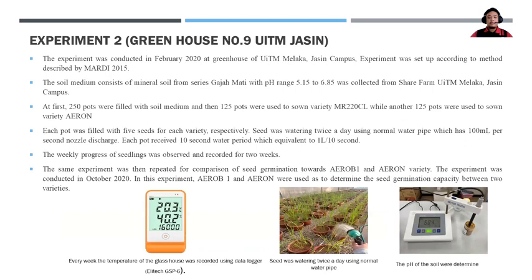Experiment 2 was conducted in 2020, with pots filled with 250 pods each. Weekly progress of seed germination was observed and recorded for two weeks, or 14 days. Throughout the entire two weeks, temperature and humidity were recorded using a data logger, the ELITECH-TSP6.